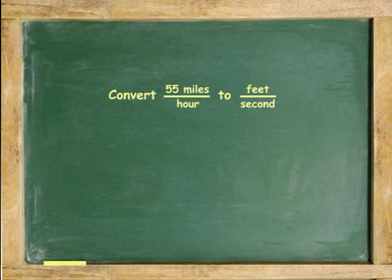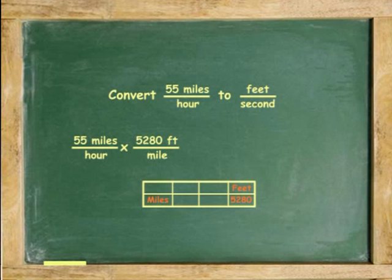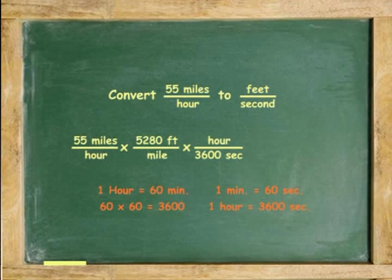Another example: Convert 55 miles per hour to feet per second. 55 miles per hour times 5,280 feet in one mile times 1 hour has 3,600 seconds. Cancel miles. Cancel hours. 55 times 5,280 divided by 3,600 equals 80.7 feet per second.